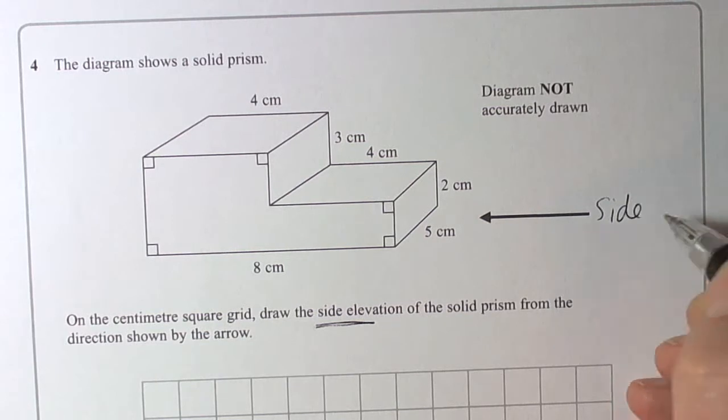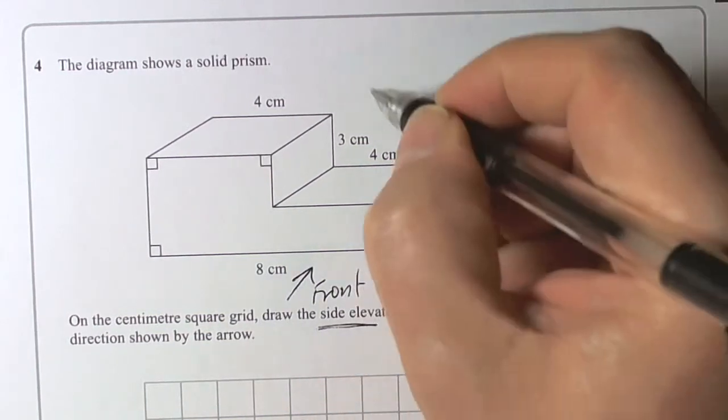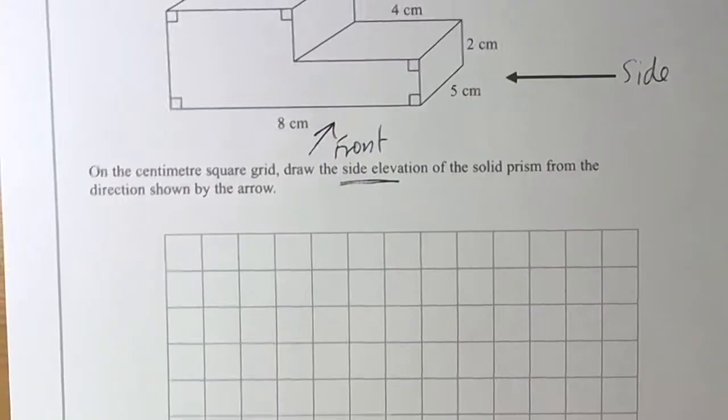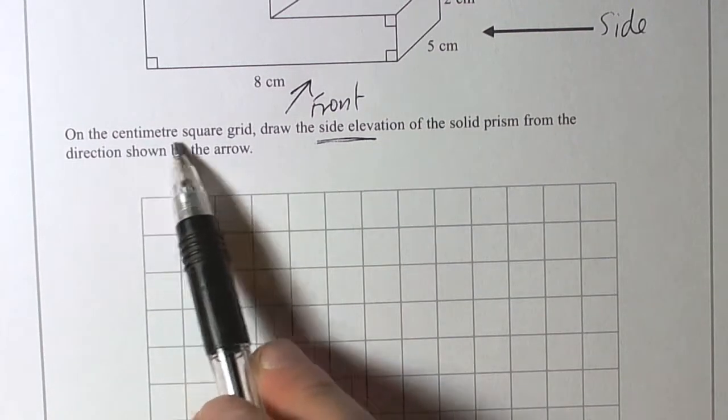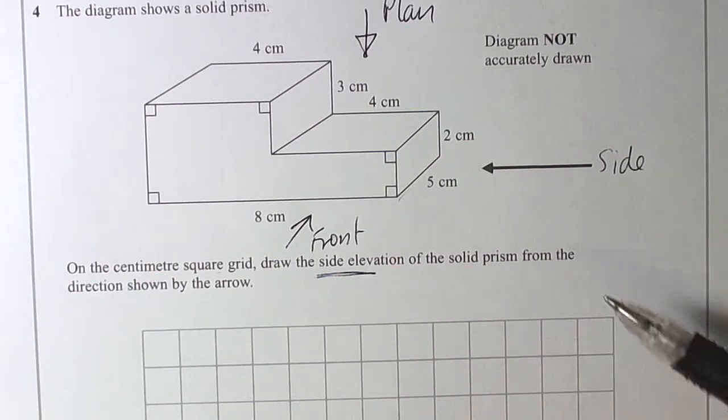If they wanted the front elevation, we would have been coming from this direction, and if they wanted the plan elevation, then we would have been coming from that direction. So they're asking us to draw accurately because they're telling us on a centimeter square grid, and the numbers have been given in centimeters.